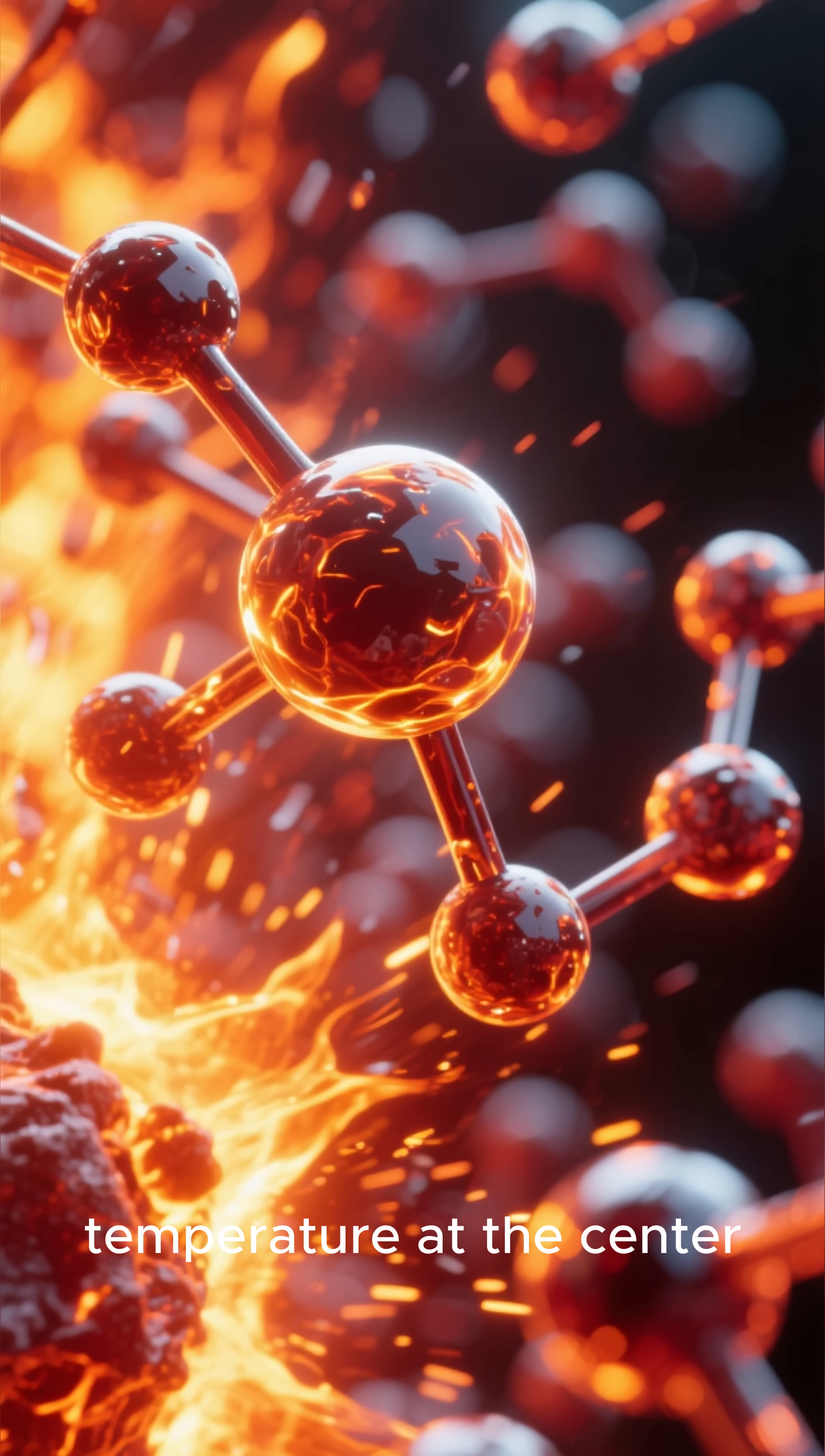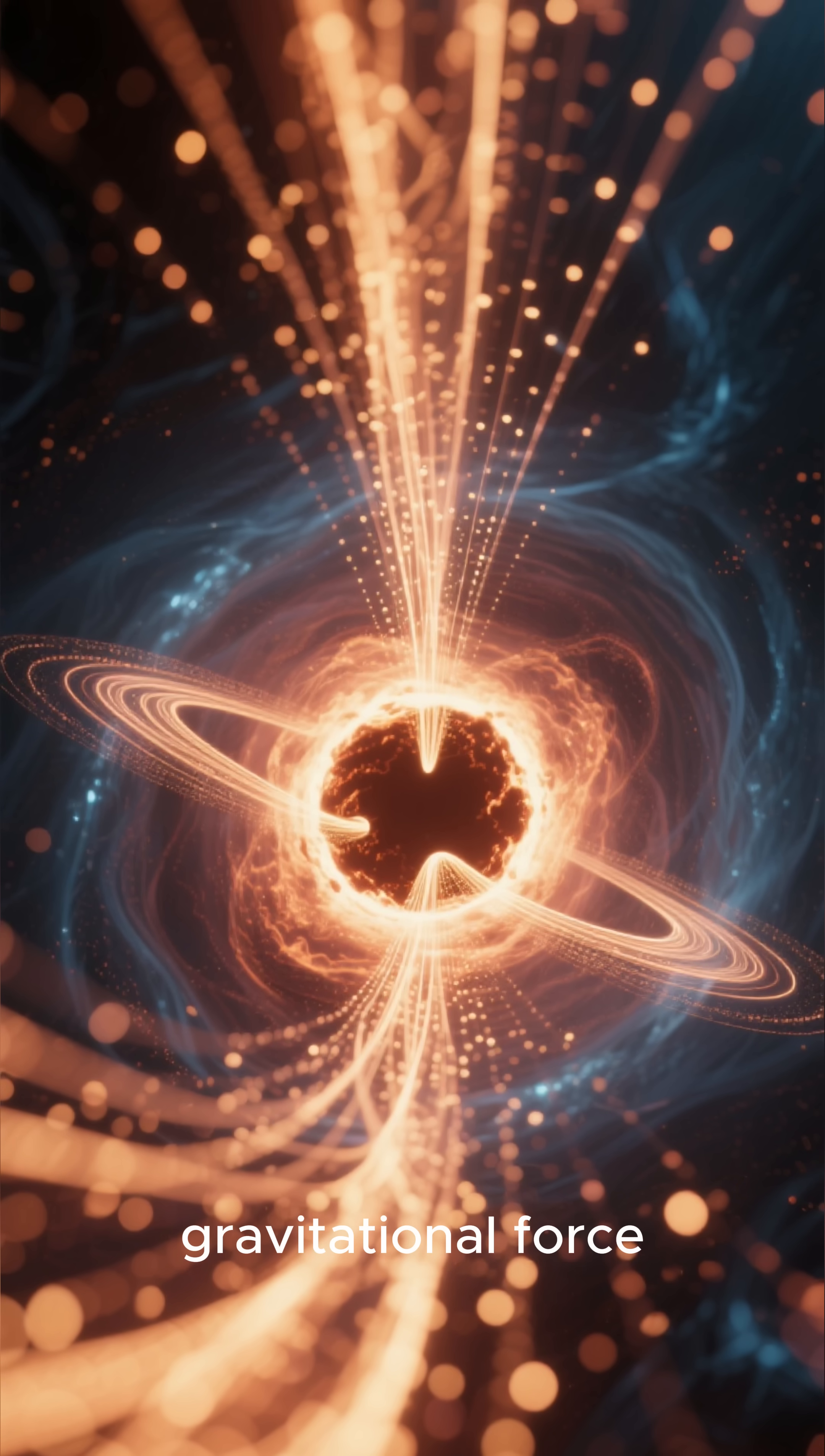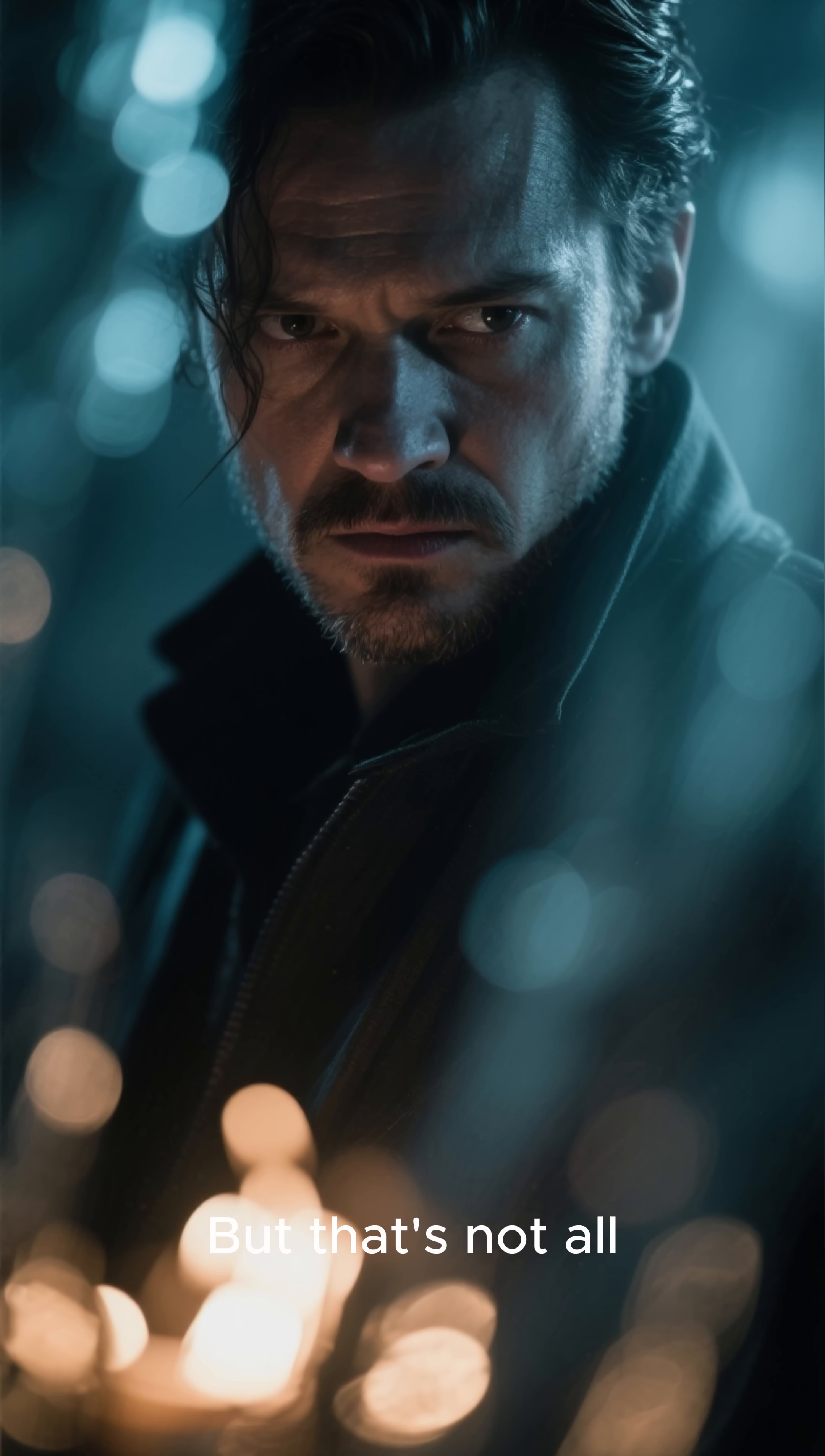That's because the temperature at the center of the Earth is so high that it makes the iron atoms vibrate really fast. This vibration makes the inner core less dense, which means it can't exert as much gravitational force. As a result, the inner core actually starts to spin faster than the rest of the Earth. This causes it to flatten at the poles and bulge at the equator.